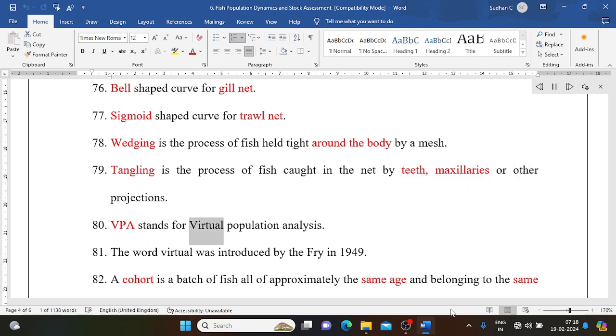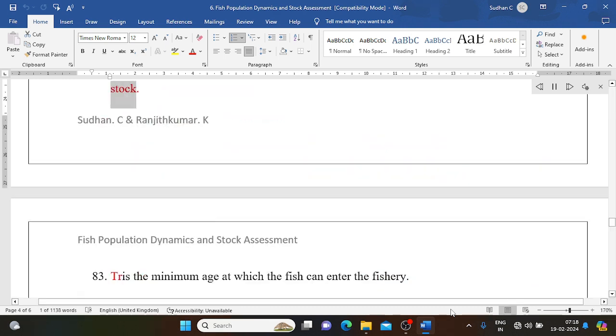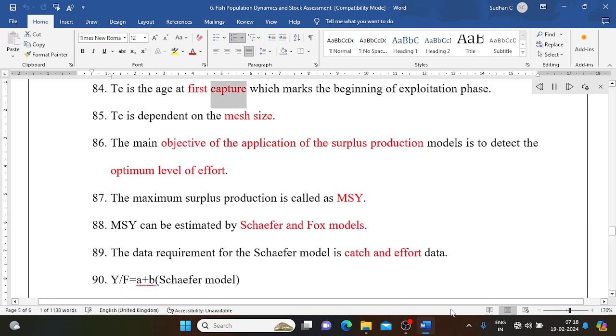VPA stands for Virtual Population Analysis. The word virtual was introduced by Fry in 1949. A cohort is a batch of fish all of approximately the same age and belonging to the same stock. Tr is the minimum age at which the fish can enter the fishery. Tc is the age at first capture, which marks the beginning of exploitation phase. Tc is dependent on the mesh size.